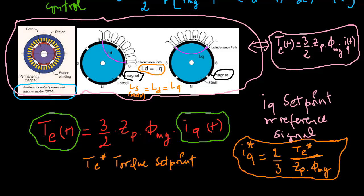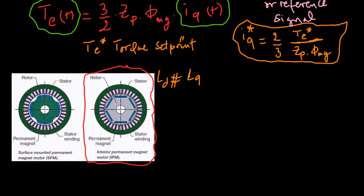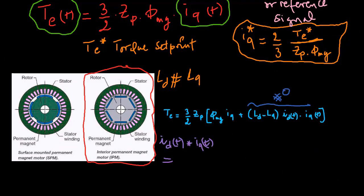If it is an internally mounted PMSM, the second term is not zero. By approximation using an expansion of the Taylor series, the term will be linearized.